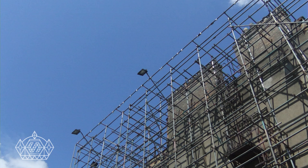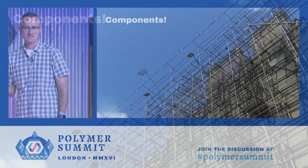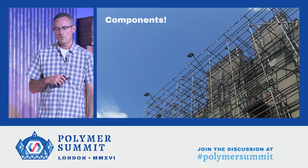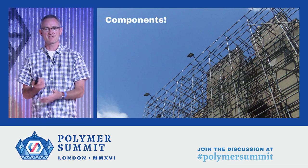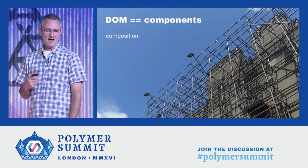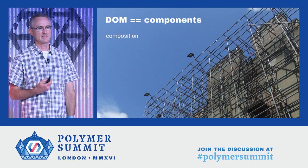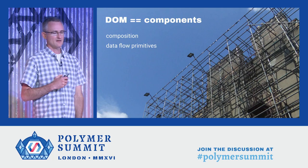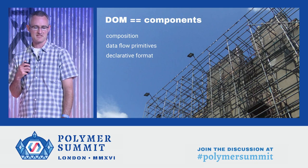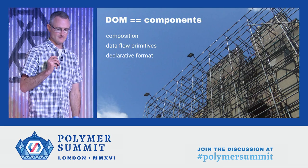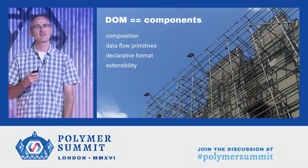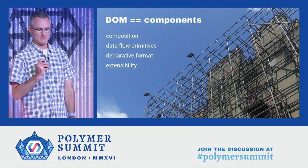So what does it mean to think in Polymer? It all starts with components, of course. But components aren't unique to Polymer — virtually every modern approach to front-end development is based on components. What makes Polymer different from many other frameworks and libraries is that instead of bringing its own component model, it uses the one that the browser provides: the DOM. The DOM really has all the pieces of a basic component model — composition, basic facilities for moving data around via attributes, properties, and events, a native declarative format called HTML, and critically, extensibility. With Web Components, developers for the first time have the ability to extend the semantics of DOM.